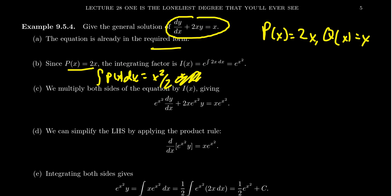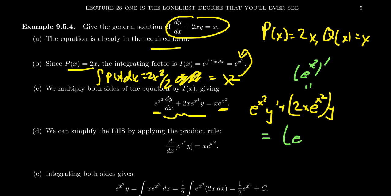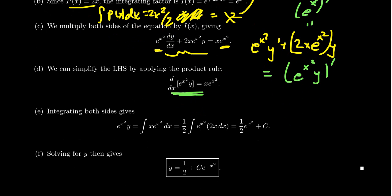Since p(x) is 2x, the anti-derivative is x squared. We plug that in as the exponent of e, so our integrating factor is e to the x squared. Multiplying both sides of the original differential equation by e to the x squared, the left-hand side becomes e to the x squared times y prime plus 2x times e to the x squared times y, which factors as the derivative of e to the x squared times y by the product rule. The right-hand side is x times e to the x squared.